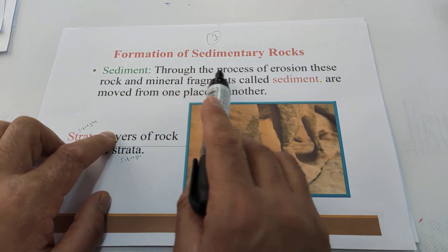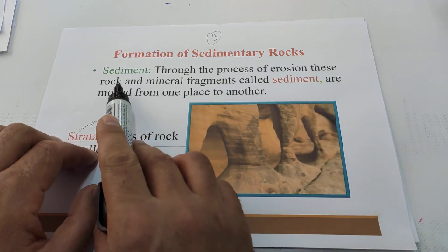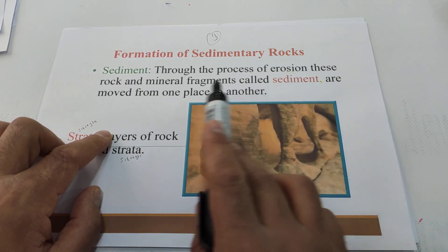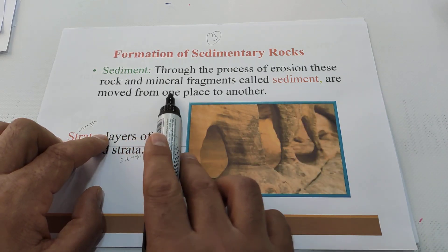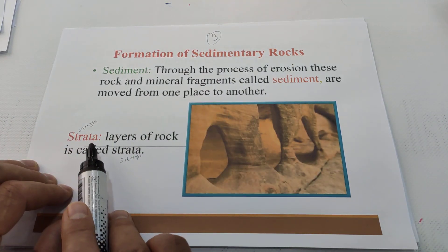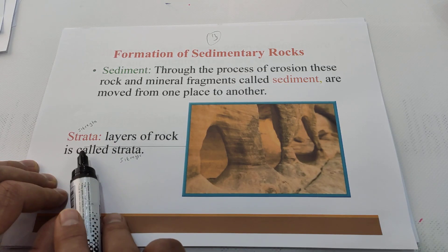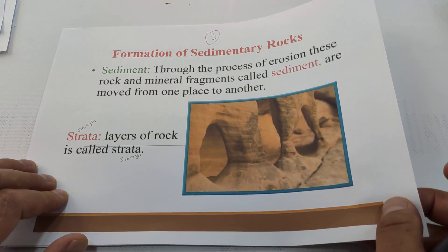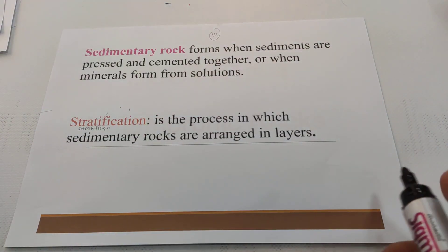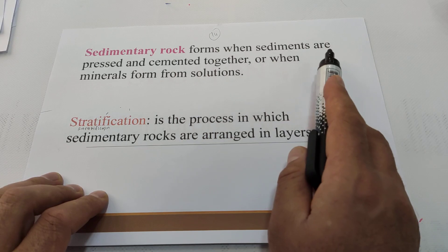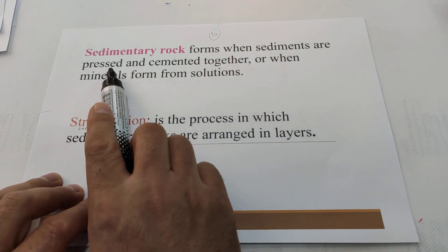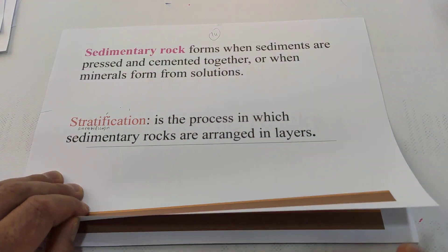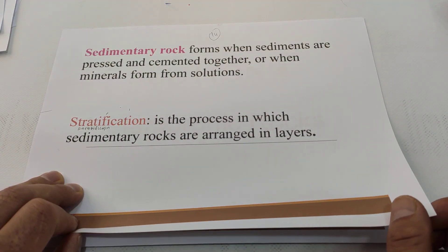Through the process of erosion, rocks and mineral fragments called sediment are moved from one place to another. Strata are the layers of rock — meaning the layers of sand. Sedimentary rocks form when sediments are pressed and cemented together, or when minerals form from solution.